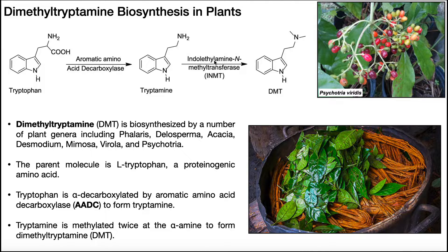Now this enzyme, indolethylamine N-methyltransferase, or INMT, is going to use the methyl group from SAM, or S-adenosylmethionine, to methylate the amine group twice. SAM is really the universal methyl group donor, so it requires two molecules of SAM — one for the first methyl group and a second for the second. The overall effect is we get this amine dimethylated. That's really where we get the name: tryptamine methylated twice gives us dimethyltryptamine, or DMT.